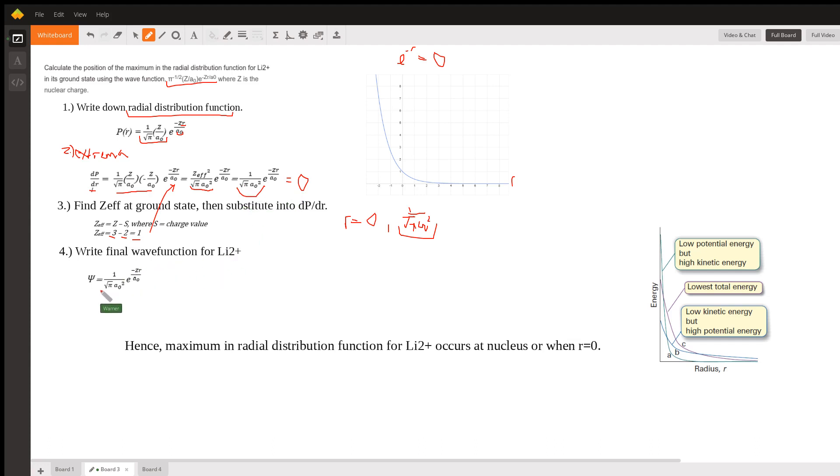So the final wave function, we could write it as this, where this is going to be the max only when R is equal to zero. So the maximum radial distribution function for lithium occurs at the nucleus when, or when R is equal to zero.